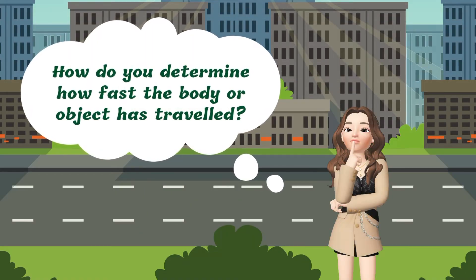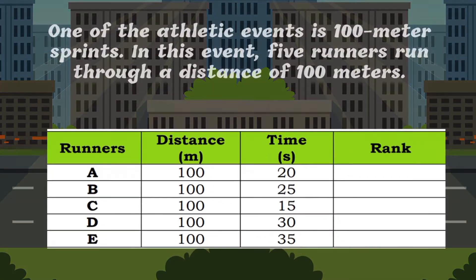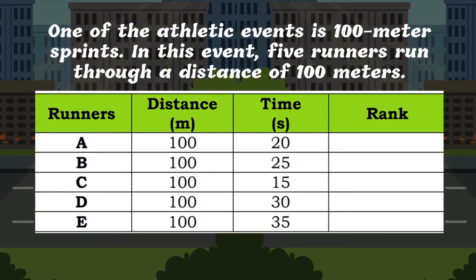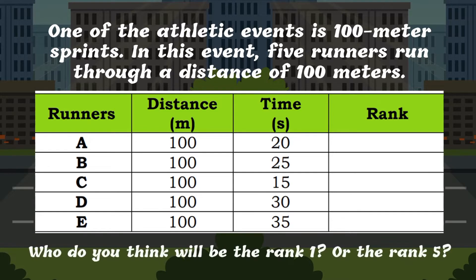How do you determine how fast a body or object has traveled? Let us have a scenario. One of the athletic events is the 100-meter sprint. In this event, 5 runners run through a distance of 100 meters. Try to analyze the data. If you answered runner C as rank 1, runner A as rank 2, runner B as rank 3, runner D as rank 4, and runner E as rank 5, then you are correct. At the same distance traveled, runner C is the fastest because he has the shortest time, and runner E is the slowest because he has the longest time of travel.